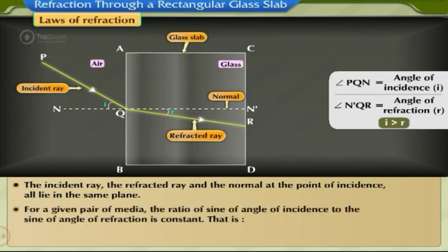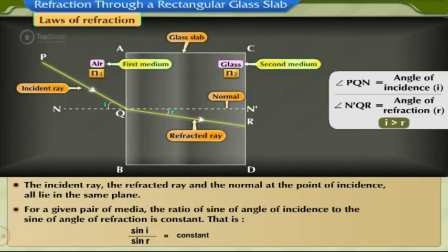For a given pair of media, the ratio of sine of angle of incidence to the sine of angle of refraction is constant. That is, sin I / sin R = constant. This constant is called the refractive index of the second medium with respect to the first medium. It is denoted by N.